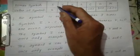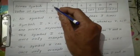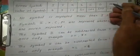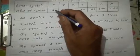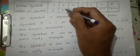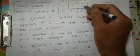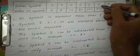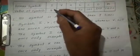Values of Roman symbols: I equals 1, V equals 5, X equals 10, L equals 50, C equals 100, D equals 500, M equals 1000.